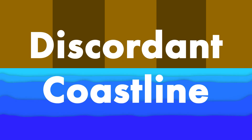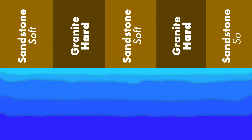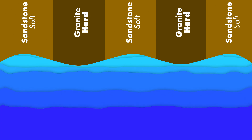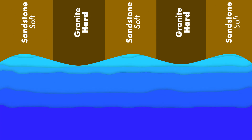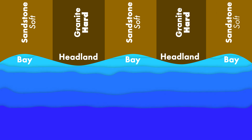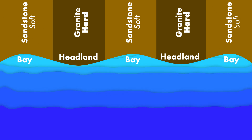Starting off with the land and water, what you are looking for is a coastline with different types of rock running perpendicular to the shore, which is called a discordant coastline. When the different rocks have vastly different hardnesses, one type tends to erode faster than the other, creating a wave pattern on the coastline with sections called bays and headlands. These are your foundation for the spit and act as the anchor for the material of your future spit to accumulate.